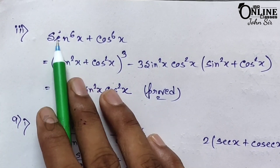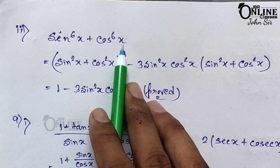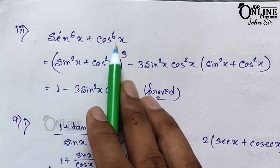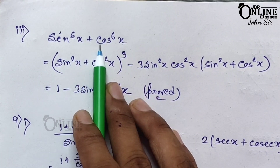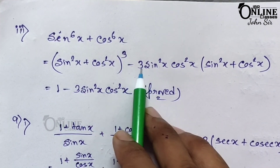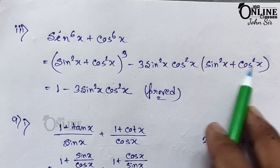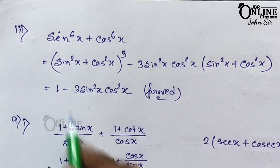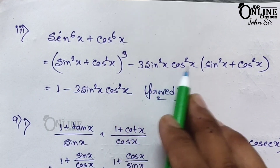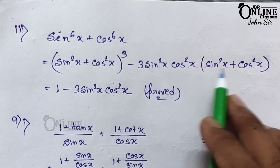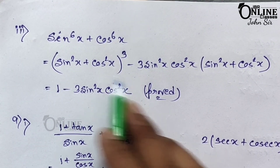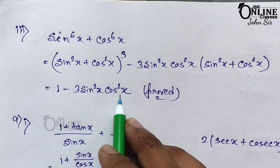Sum number 8.3: sin⁶x + cos⁶x — prove it equals 1 − 3sin²x·cos²x. Write as (sin²x)³ + (cos²x)³ and apply the formula a³ + b³ = (a+b)³ − 3ab(a+b). Since sin²x + cos²x = 1, we get 1³ − 3·sin²x·cos²x·1 = 1 − 3sin²x·cos²x, proved.